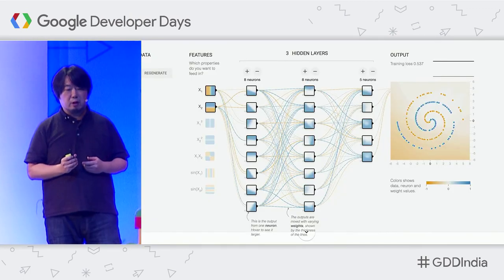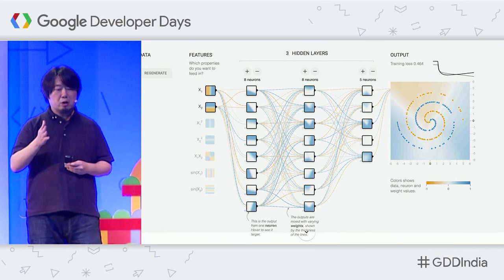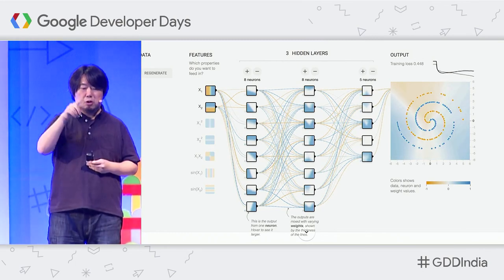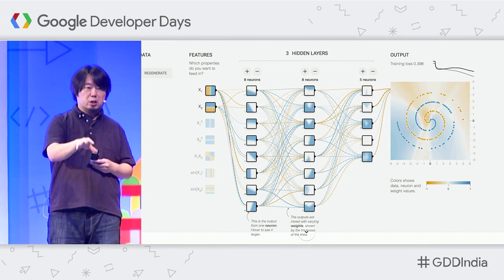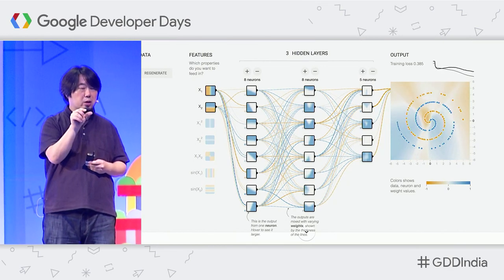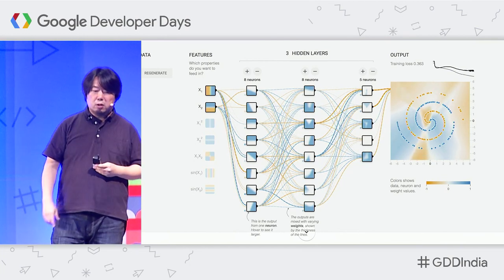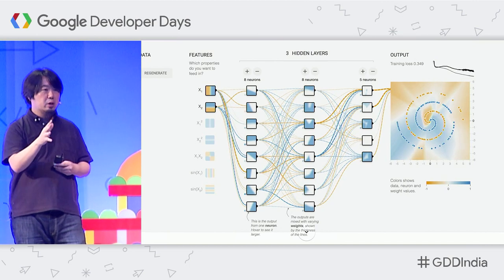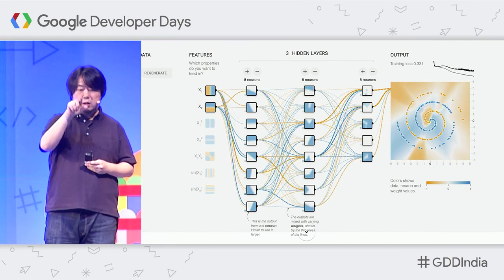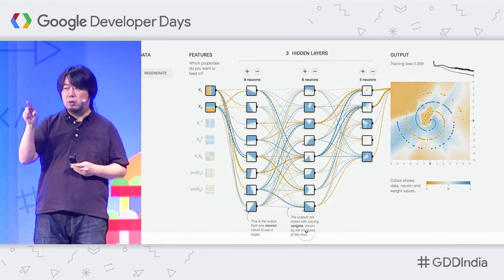Let's take a look at a demonstration video called TensorFlow Playground, where you can build real neural networks inside your browser. Anyone can search for TensorFlow Playground and play with it. You can see how gradually a neural network tries to classify the data points on a 2D space as an orange spiral or a blue spiral.